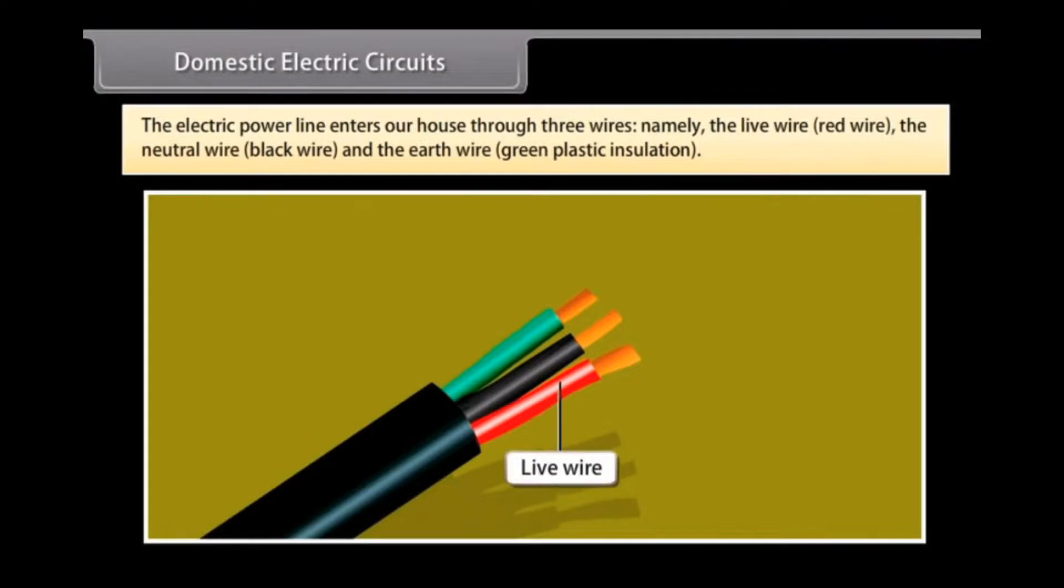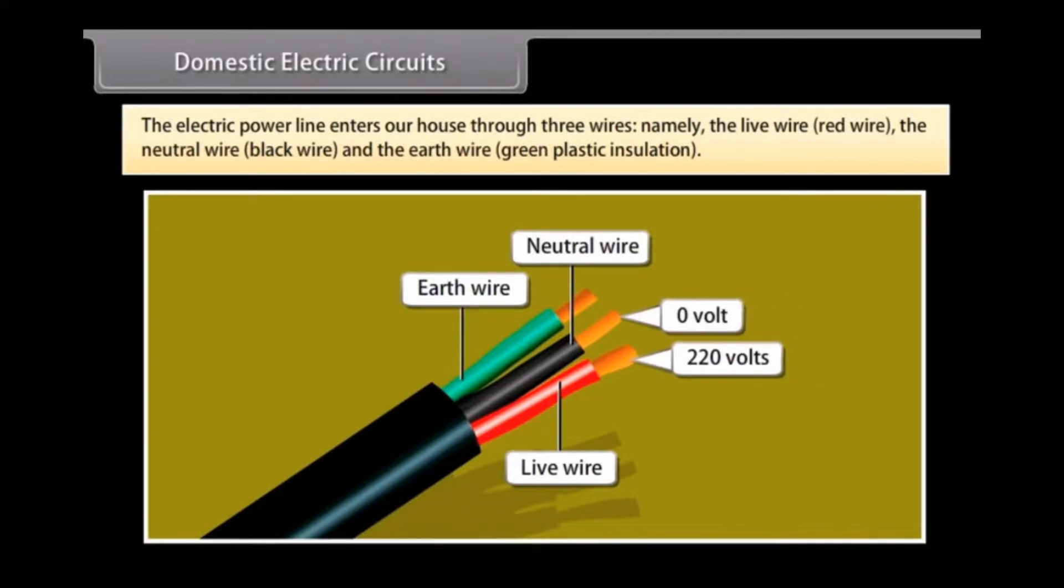Namely, the live wire (red wire), the neutral wire (black wire), and the earth wire (green plastic insulation). The live wire has a high potential of 220 volts, and the neutral wire has zero potential. Thus, the potential difference between the live wire and the neutral wire is 220 minus zero, which equals 220 volts.